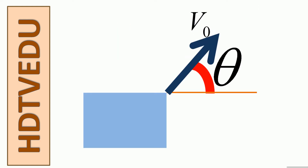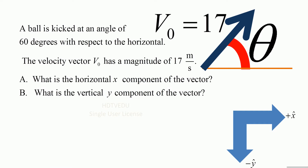X and Y components are vectors. We are given the velocity vector and the angle. A ball is kicked at an angle of 60 degrees with respect to the horizontal. The velocity vector has a magnitude of 17 meters per second. What is the horizontal x-component of the vector and what is the vertical y-component of the velocity vector? V0x is the x-component and V0y is the y-component of the velocity vector.